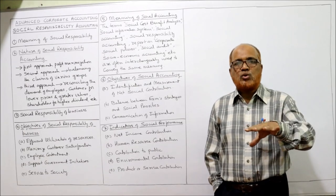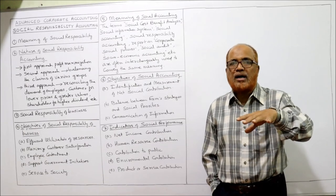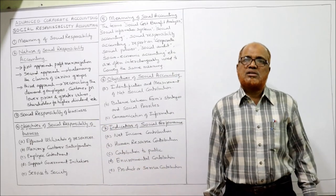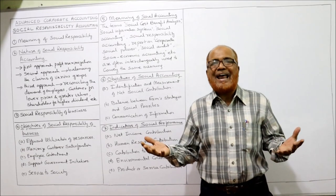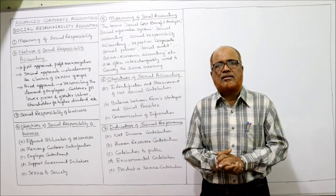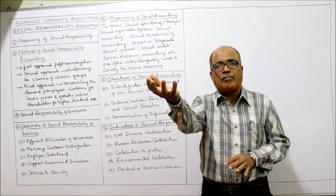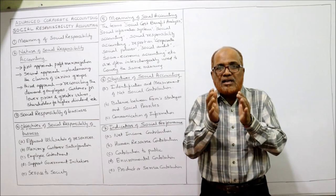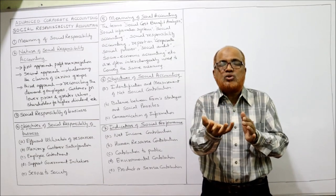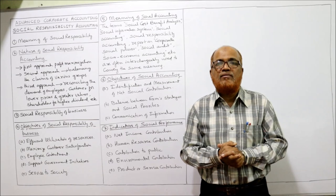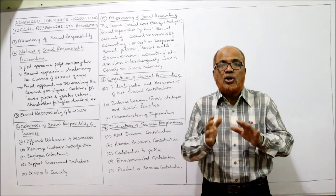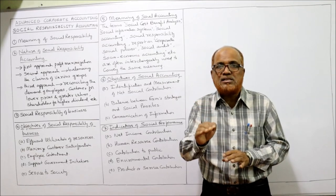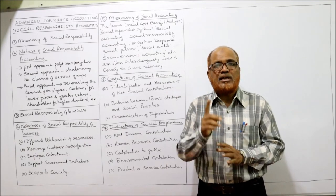What are the objectives of social responsibility? First: efficient utilization of resources. We are given many natural resources which are used by organizations. It is the responsibility of the firm that these resources are effectively and efficiently utilized — no resources should go to waste. Wastage should be kept at its minimum. Every resource should be effectively utilized.